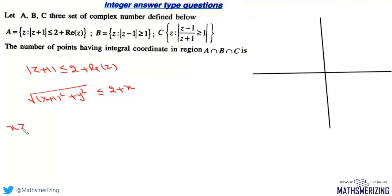If we square, we get x² + 1 + 2x + y², which is less than or equal to 4 + x² + 4x. The x² terms will cancel.